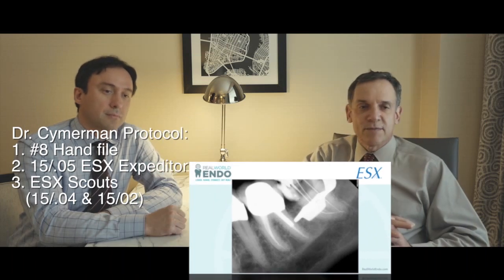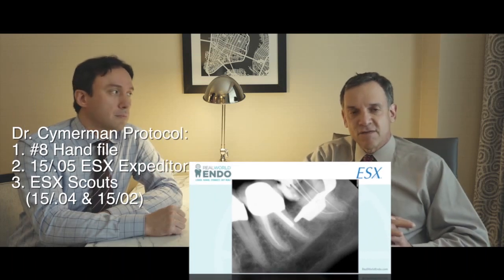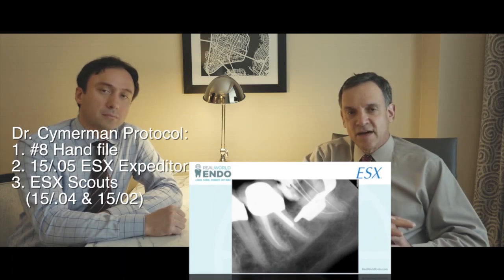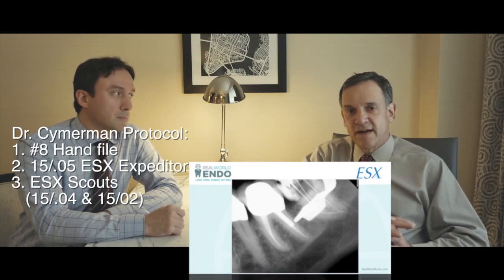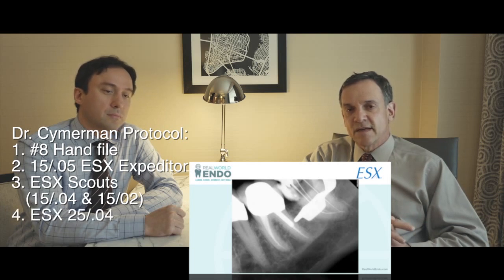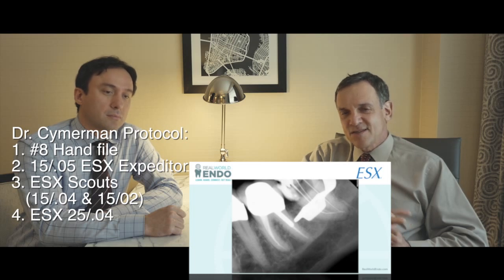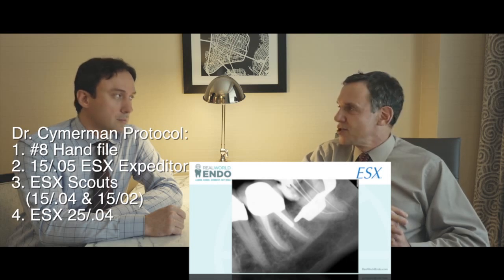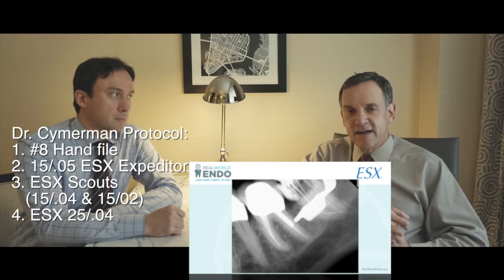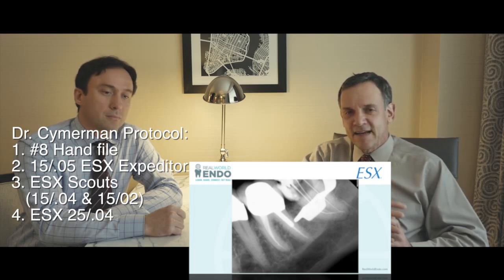Once I was able to get the 1505 ESX file down, I could then use our finishing files. We took out a 2504 and that went down each canal in one pass, but there was still a little bit of tissue left on the file, so the canals weren't completely clean.